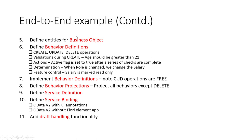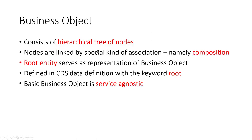Before we go into the steps of defining entities for a business object, we need to know what a business object is. In the context of ABAP RESTful Programming Language — RAP — a business object consists of a hierarchical tree of nodes, and these nodes are linked by composition.